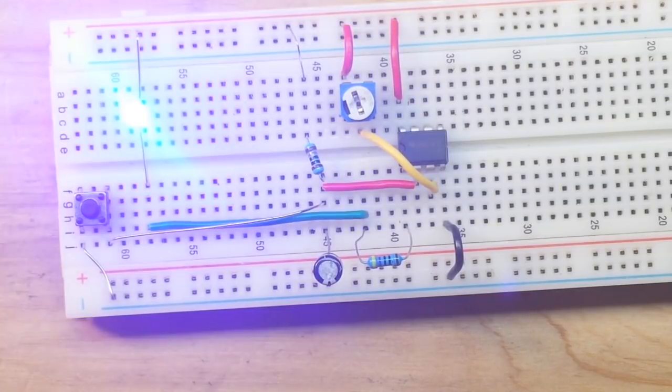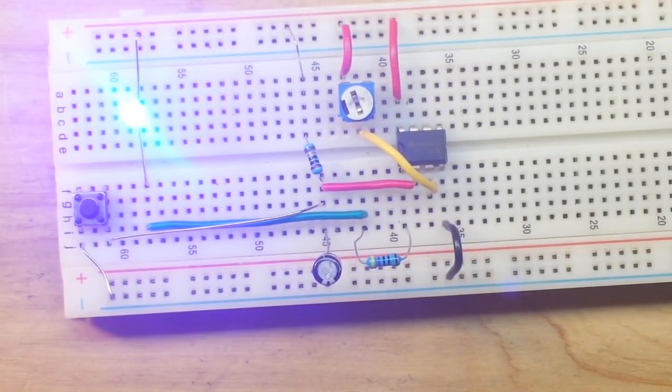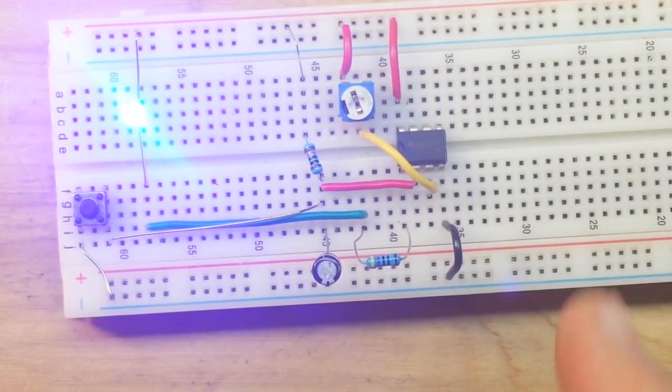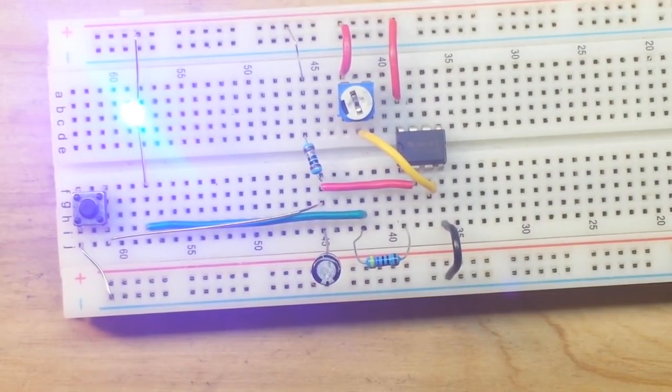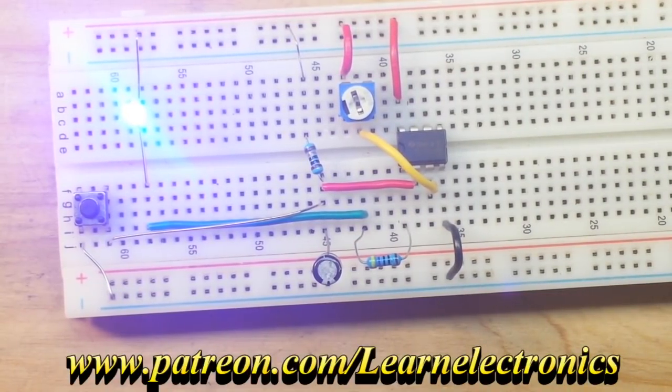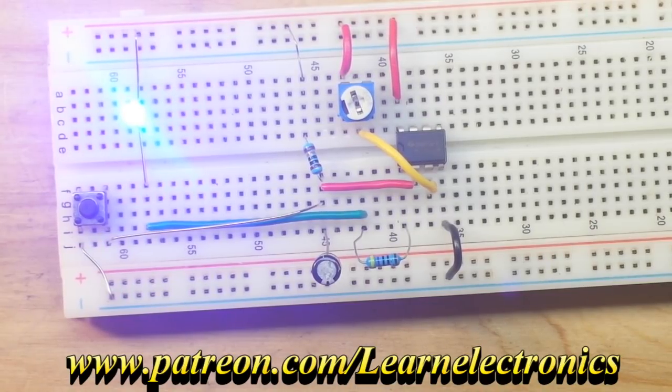Anyway, that's it for this video. A delayed circuit using the RC time constant and an op-amp as a comparator. Hope you guys enjoyed it. If you did, give me a thumbs up. Feel free to comment, share. Don't forget to subscribe. That's it. I'm out. Peace.